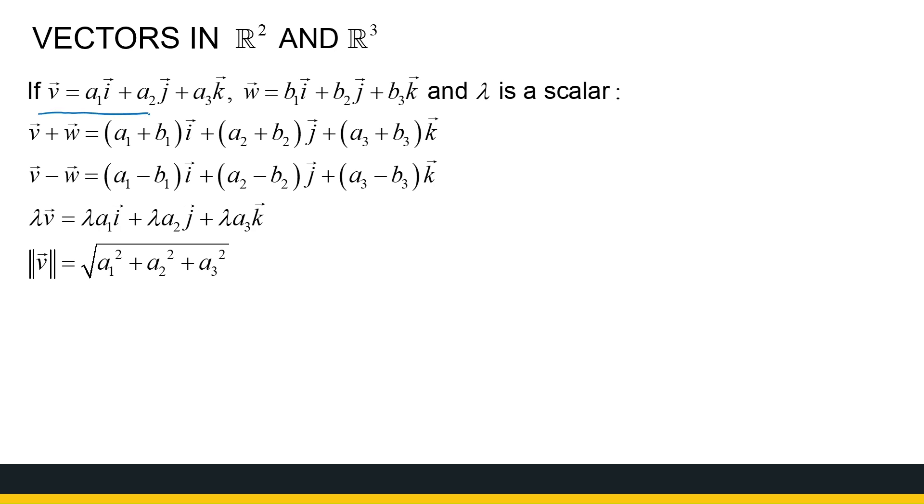So, where my original vectors are a1i plus a2j plus a3k. So, that means in the other notation, vector v is just a1, a2, and a3. And same with vector w, b1, b2, and b3.